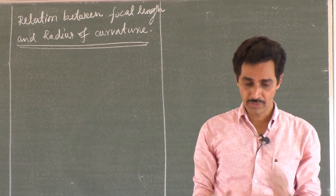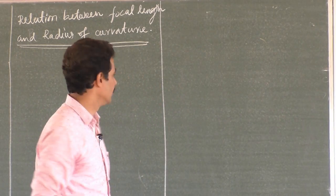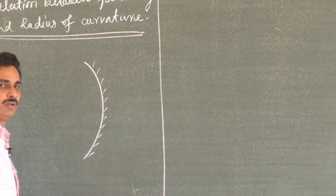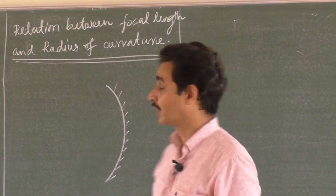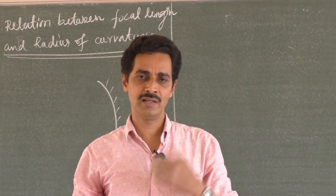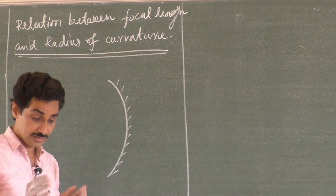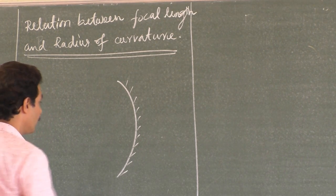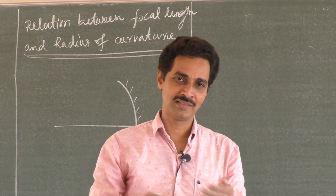We will study the relation between focal length and radius of curvature in a curved mirror. Every curved mirror is a part of a sphere. Be ready with a paper and a pen — write everything I write, because we will study the gist of the derivation. Don't watch this like a film; have pen and paper ready.